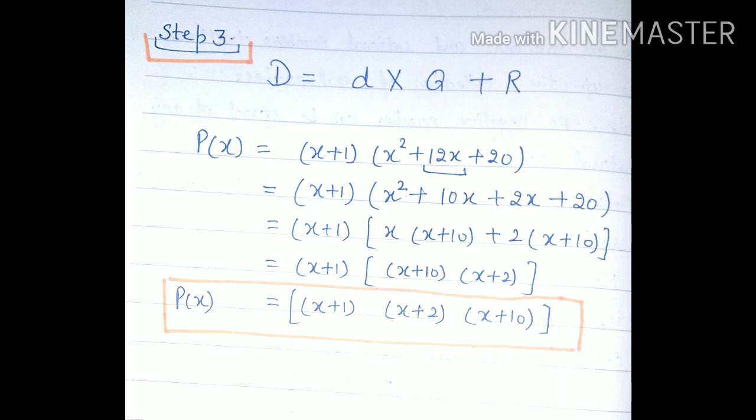Hence, the three factors of the given cubic polynomial are x + 1, x + 2, and x + 10.